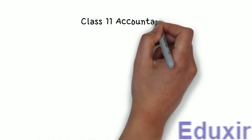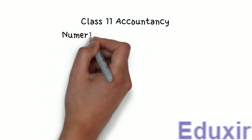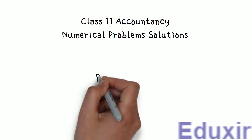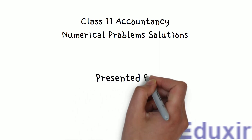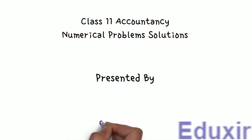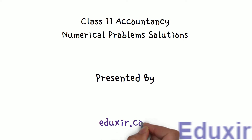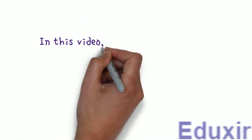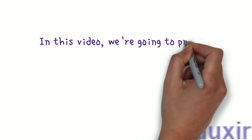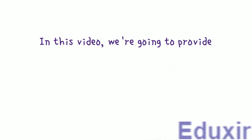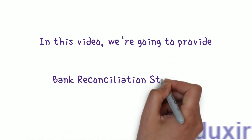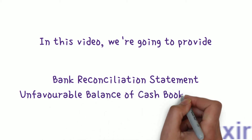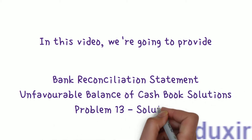Class 11 Accountancy Numerical Problems Solutions, presented by eduxit.com. In this video we are going to provide Bank Reconciliation Statement — Unfavorable Balance of Cashbook Solutions. Problem 13 Solution.